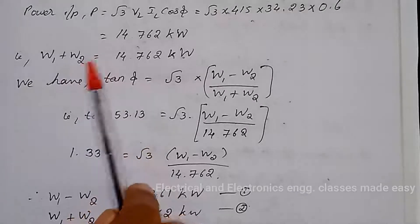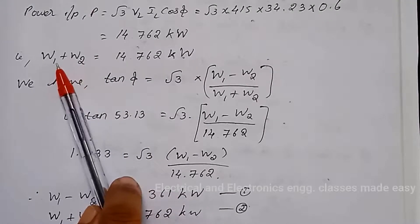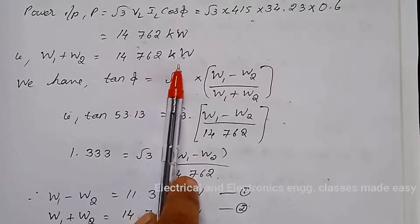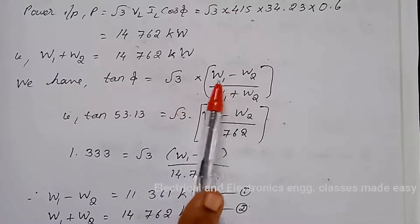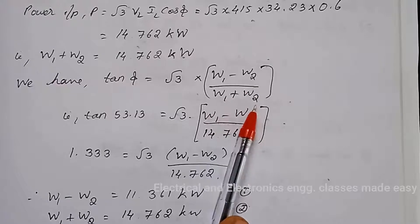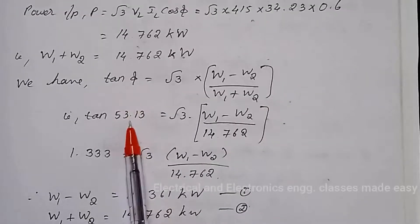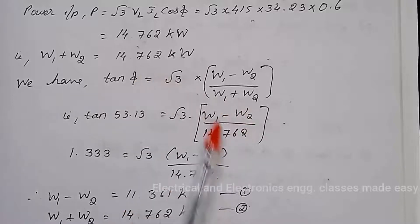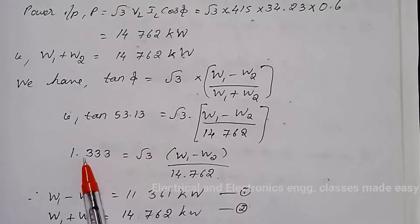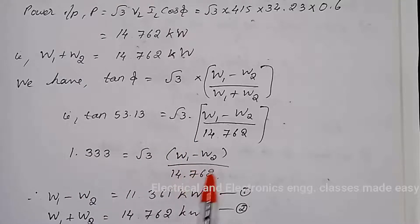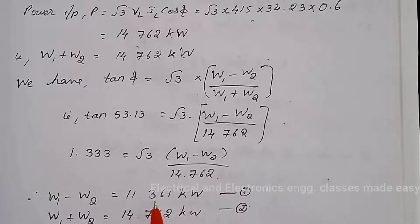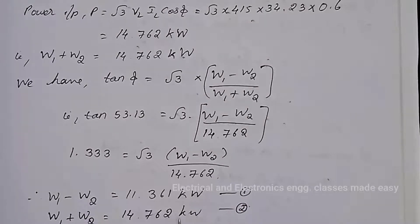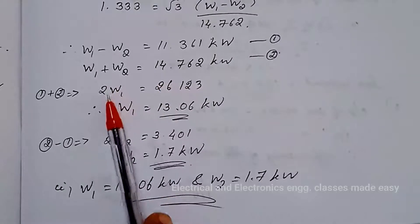The input power is the total power, so W1 + W2 = 14.762 kW. Now, tan φ = √3 × (W1 − W2) / (W1 + W2), so tan(53.13°) = √3 × (W1 − W2) / 14.762. That gives 1.333 = √3 × (W1 − W2) / 14.762, from which W1 − W2 = 11.361 kW (Equation 1), and W1 + W2 = 14.762 kW (Equation 2).